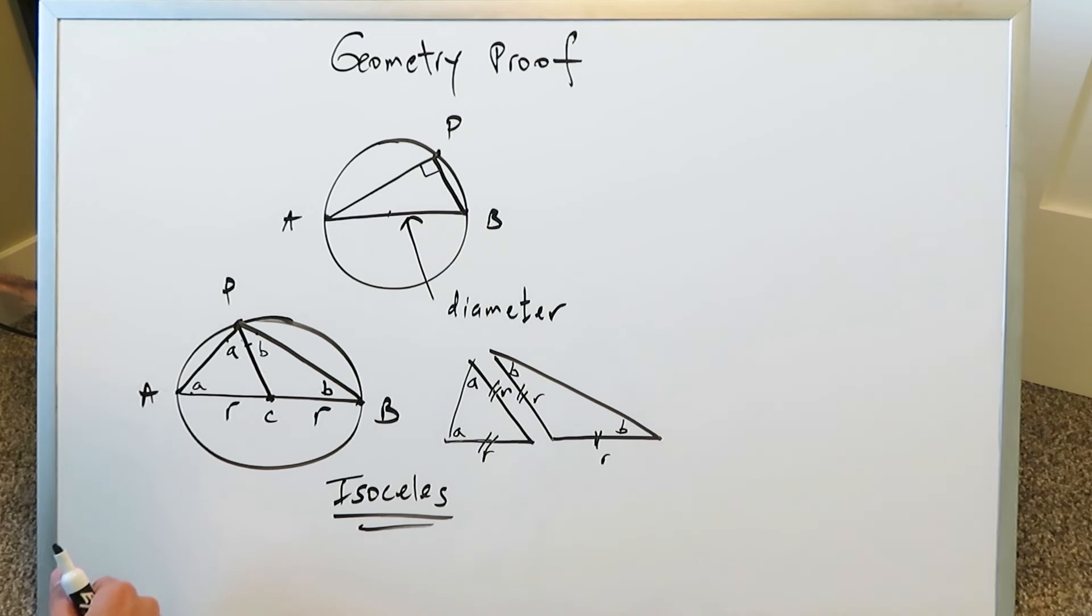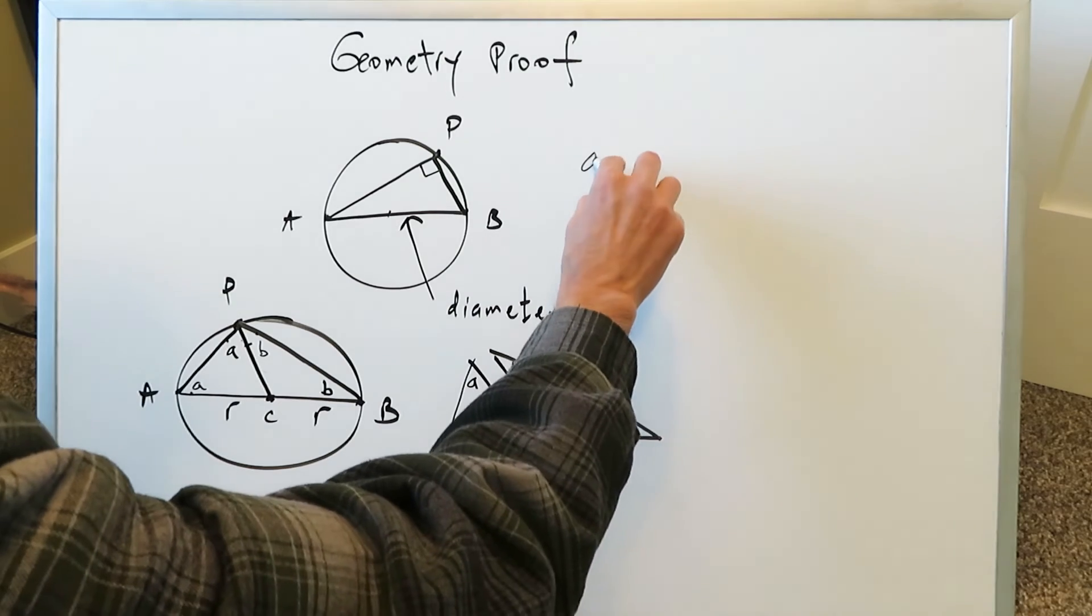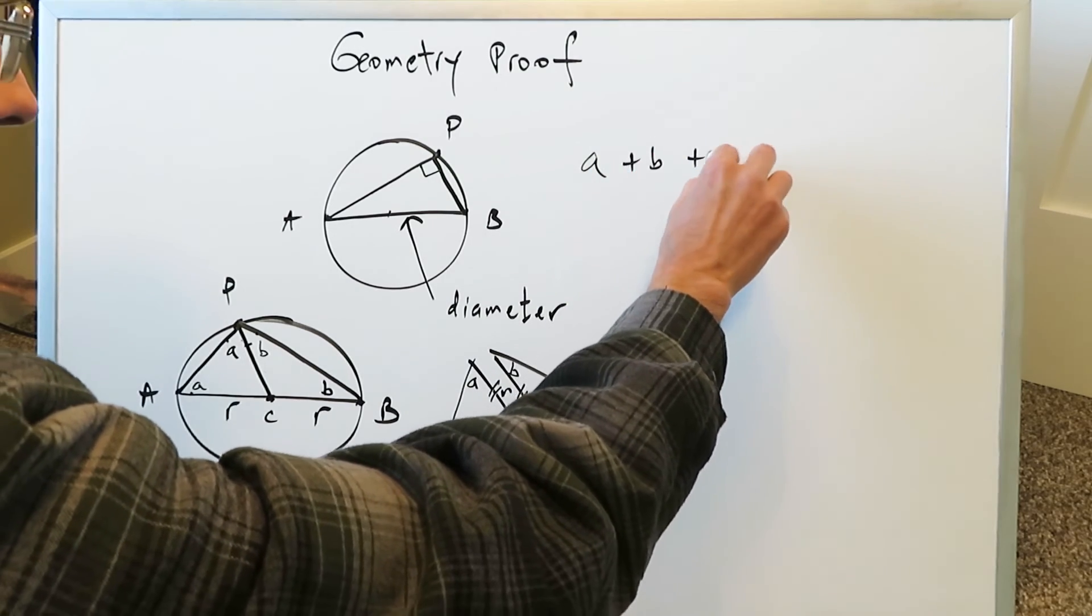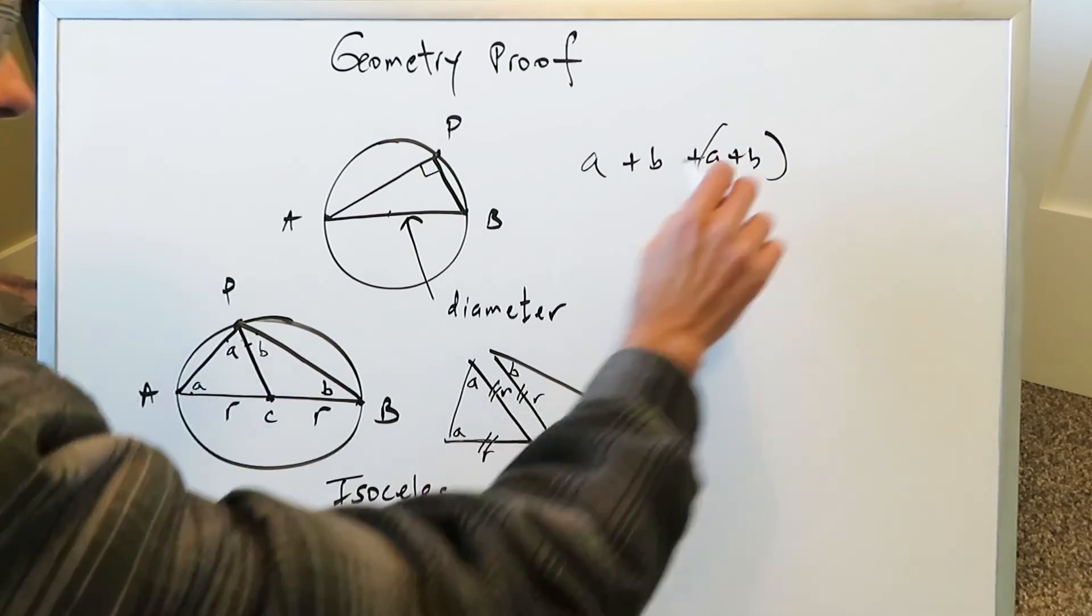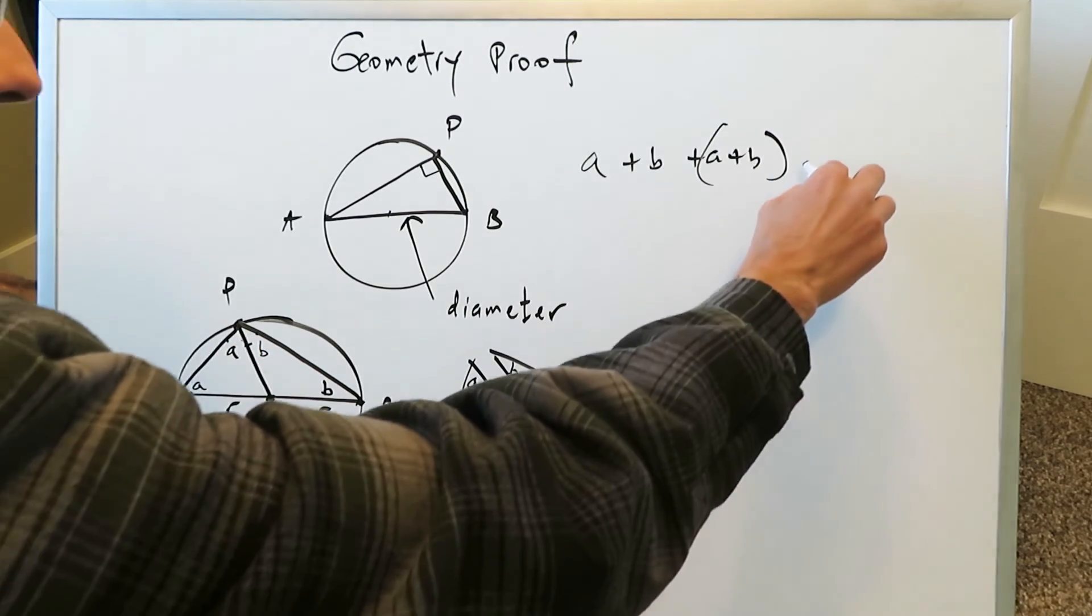If you look at a triangle, the sum of all the angles of a triangle must be 180. Look at all of these. You have A, you have B, and then you have A plus B. This A plus B represents this part right here and it must equal 180.